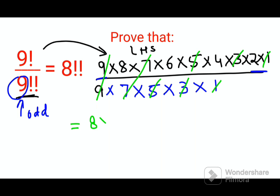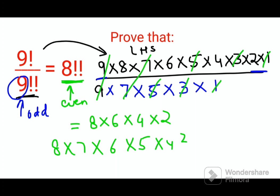So now you are left with 8, 6, 4, 2. And we need to prove it to be equal to 8 double factorial. So now see, if 8 is an even number and we need to find a double factorial of an even number, then what is 8 factorial? 8, 7, 6, 5, 4, 3, 2 and 1.